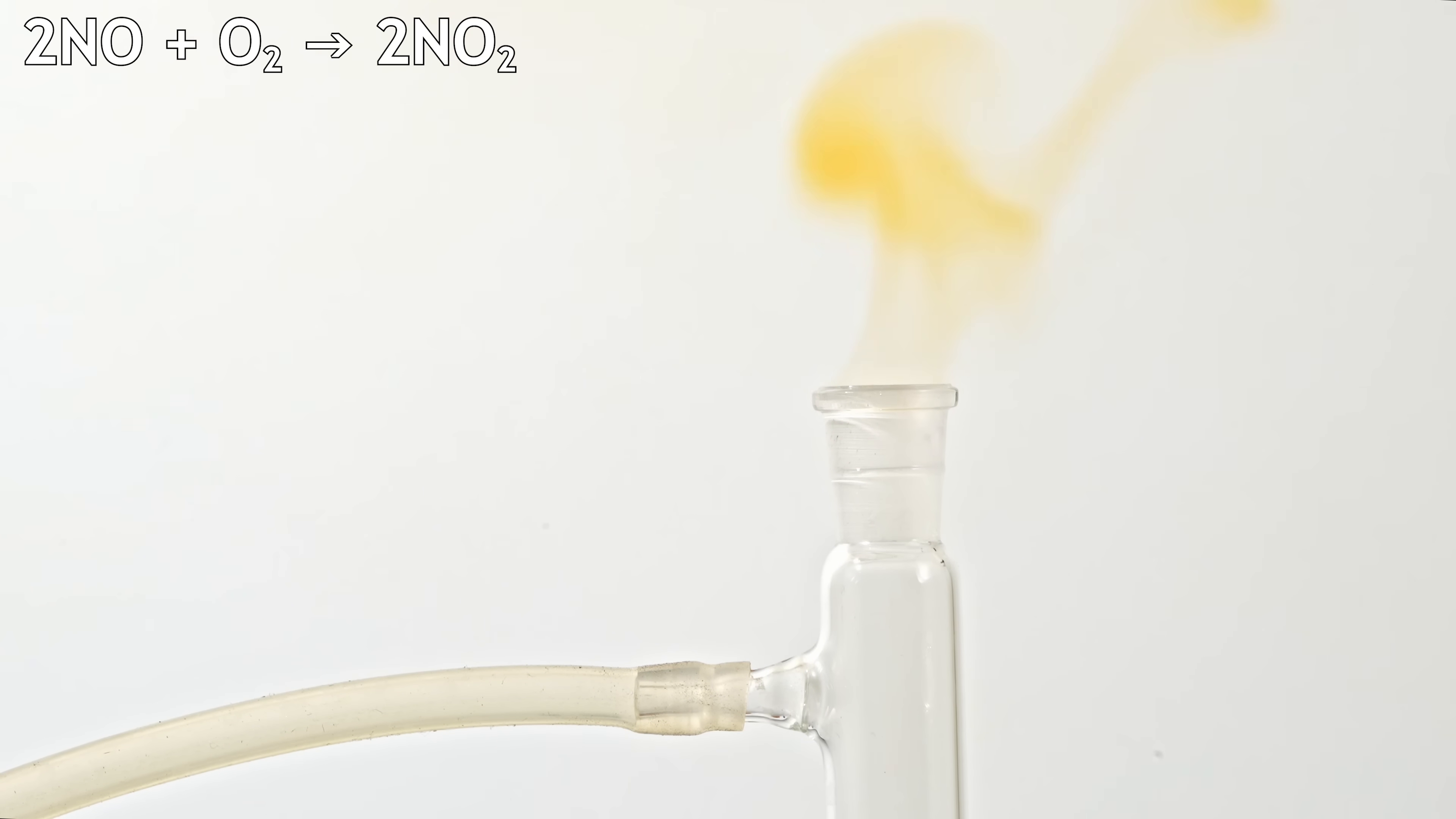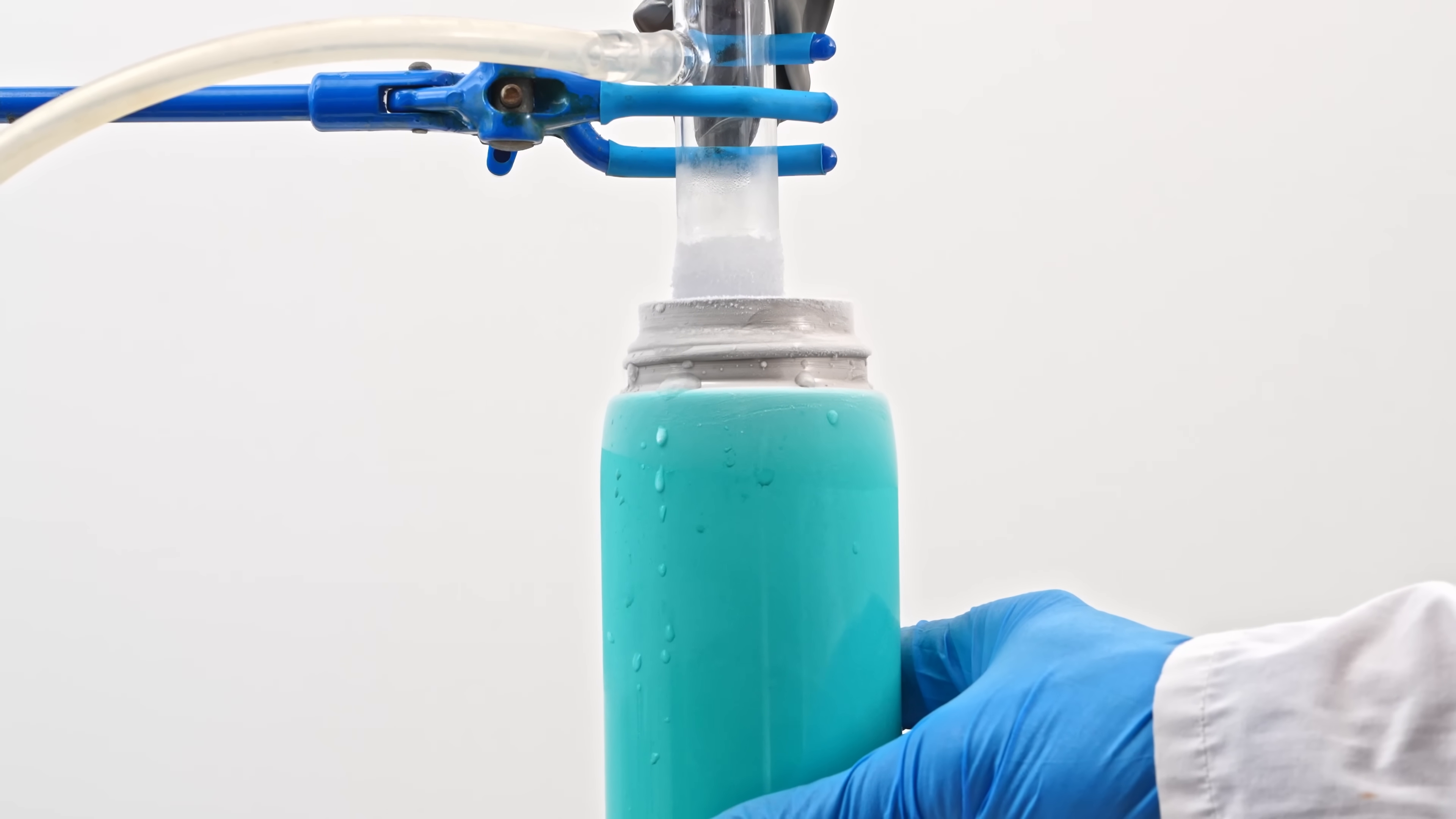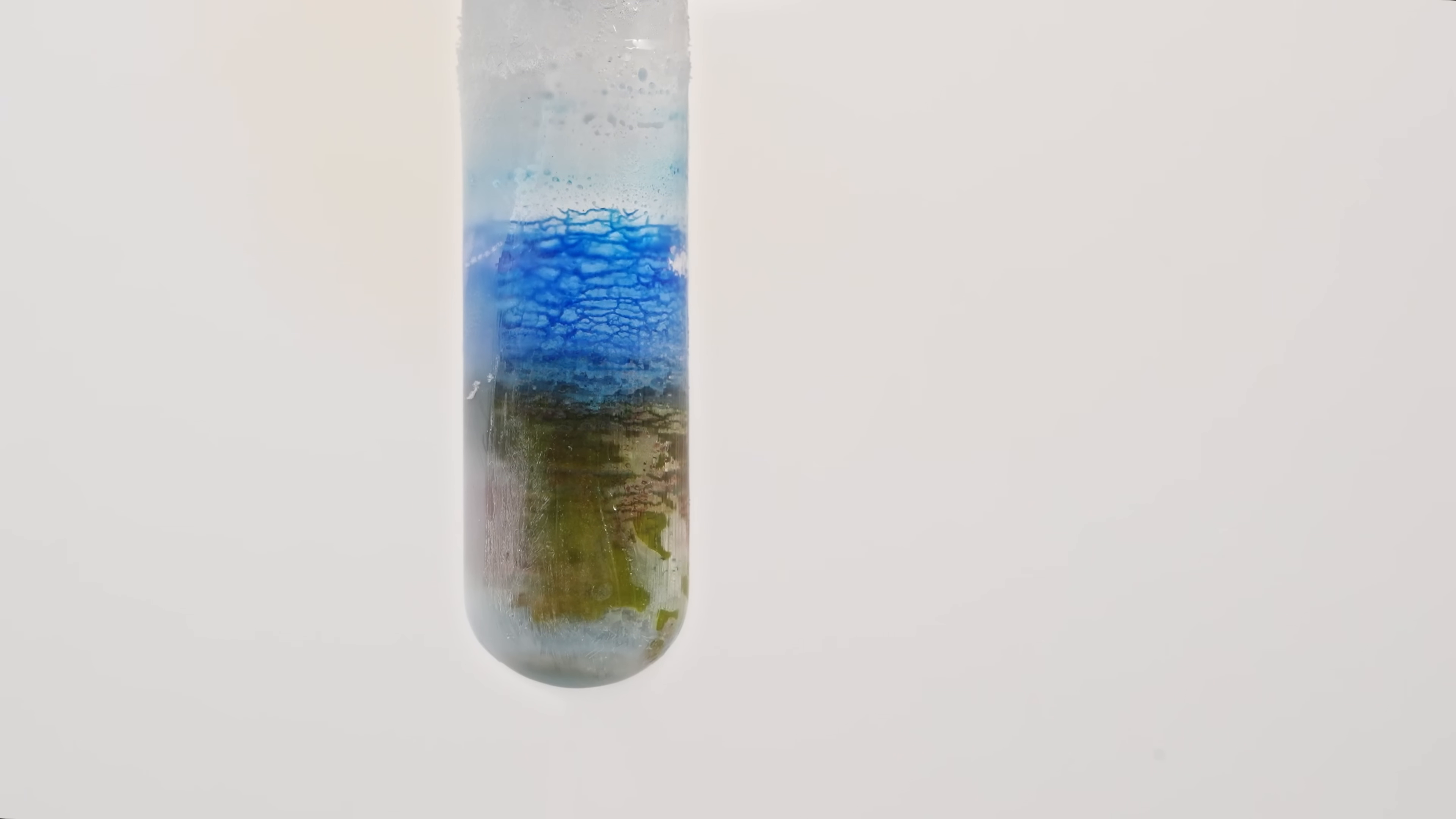Here you can see the colorless gas turning reddish-brown at the point of contact with air. But what happens when we condense this gas using liquid nitrogen? Look at these fascinating colors. You can see blue, green, and even red. It's very different from all other liquefied gases.